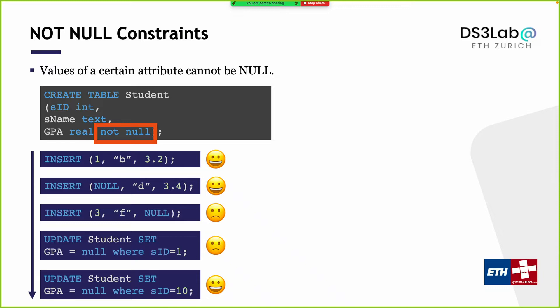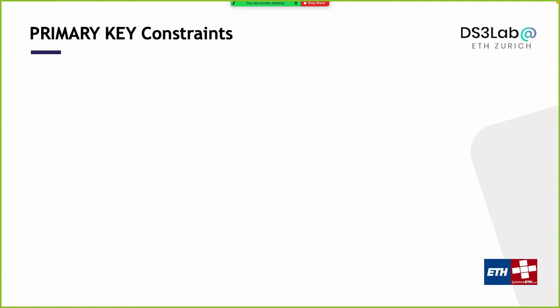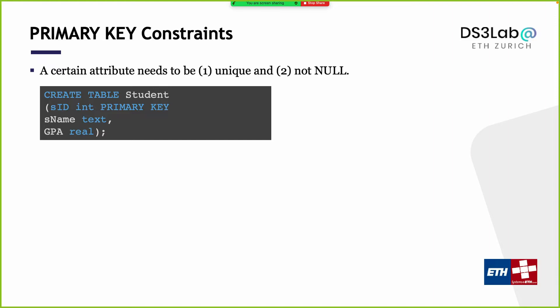The second type of constraint is the primary key. Certain attributes or a collection of attributes being a primary key means they need to be unique in the relation and also cannot be null. So whenever you have a primary key constraint, it means unique AND not null. You specify this with the PRIMARY KEY keyword following the attribute name. Whatever value is put into this relation for that attribute must be unique — you cannot find another tuple sharing the same value — and it cannot be null.